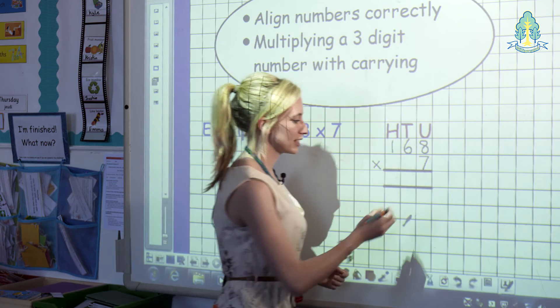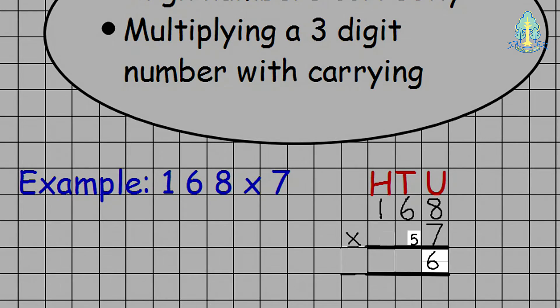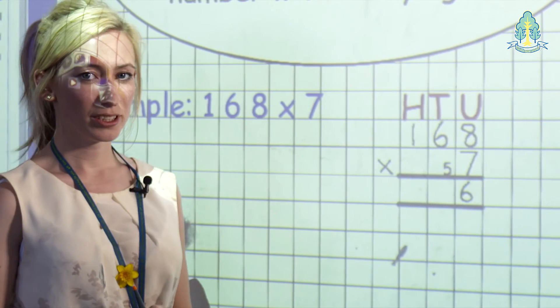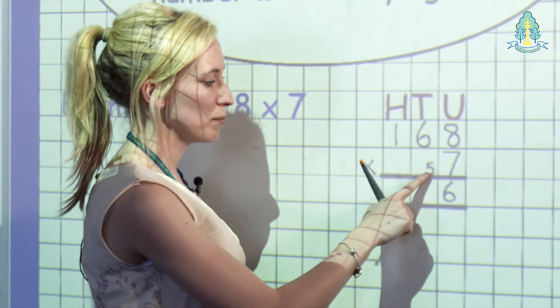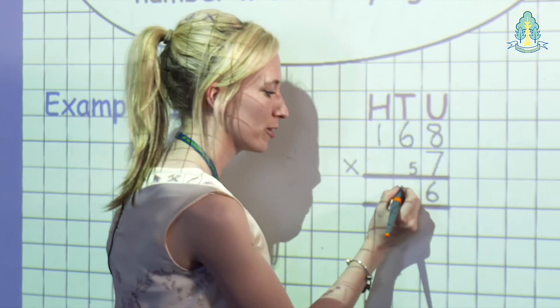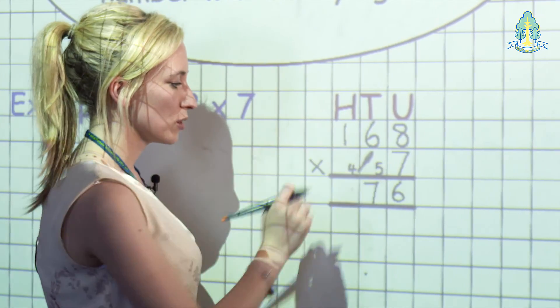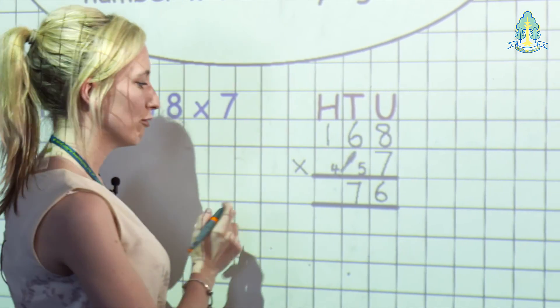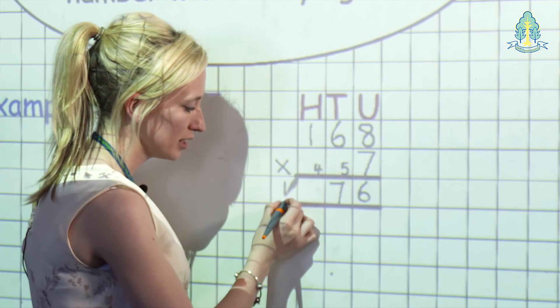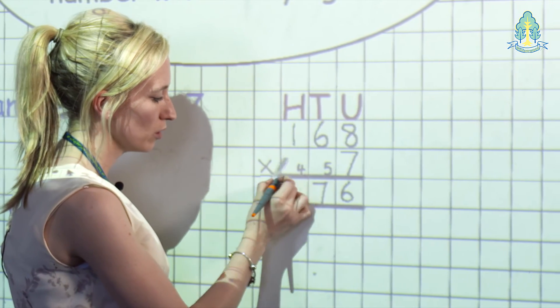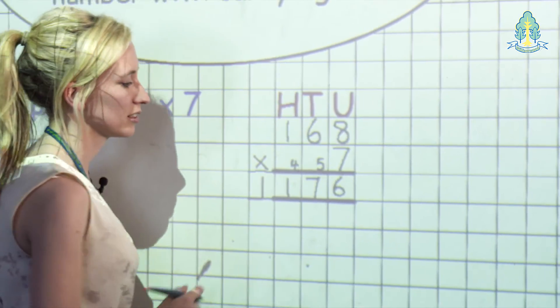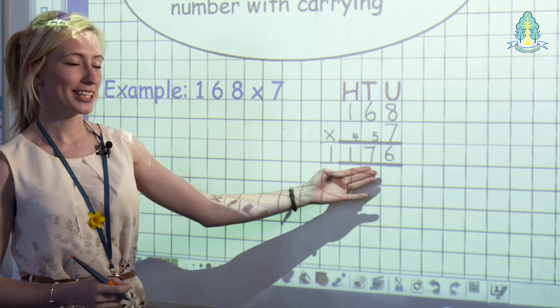So 7 times 8 is 56, putting down their units and carrying their tens. 7 times 6 is 42, but before writing that answer, remembering to carry on their 5 to give them 47. And then 7 times 1 which is 7, and carrying on their 4 to give them 11, reminding the child to put each number in its own column and extending their lines to give them 1,176.